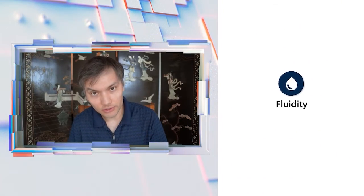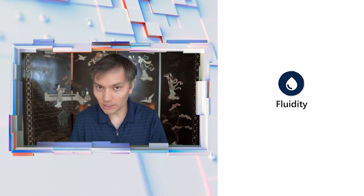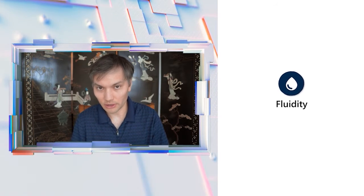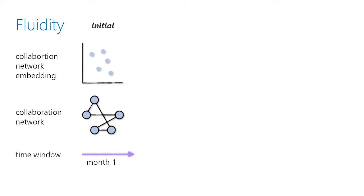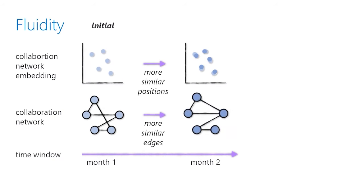The next metric I'd like to introduce is called fluidity — referred to as 'omni' in the GRASP logic library that backs this. Fluidity helps you measure how much a person's network changes over time. For example, if you have a developer working inside a core team that's not experiencing much change month over month and they're talking to the same people at the same volume every month, they would have a very low fluidity score.